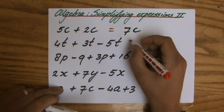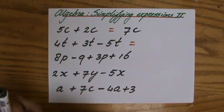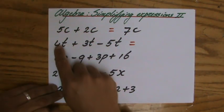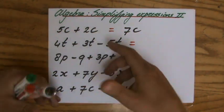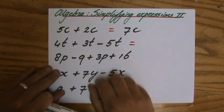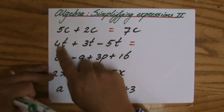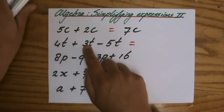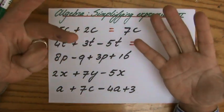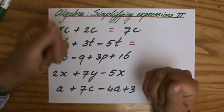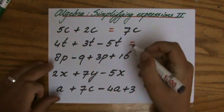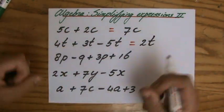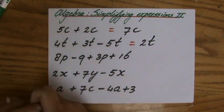Moving on to the second question, 4T plus 3T minus 5T. Do I have like terms? Yes, I do. I actually have three like terms because the variables are the same in all three terms. 4T bags plus 3T bags, I will have 7T bags, take away 5, so I will have 2T bags. So 2T, I have simplified the expression.